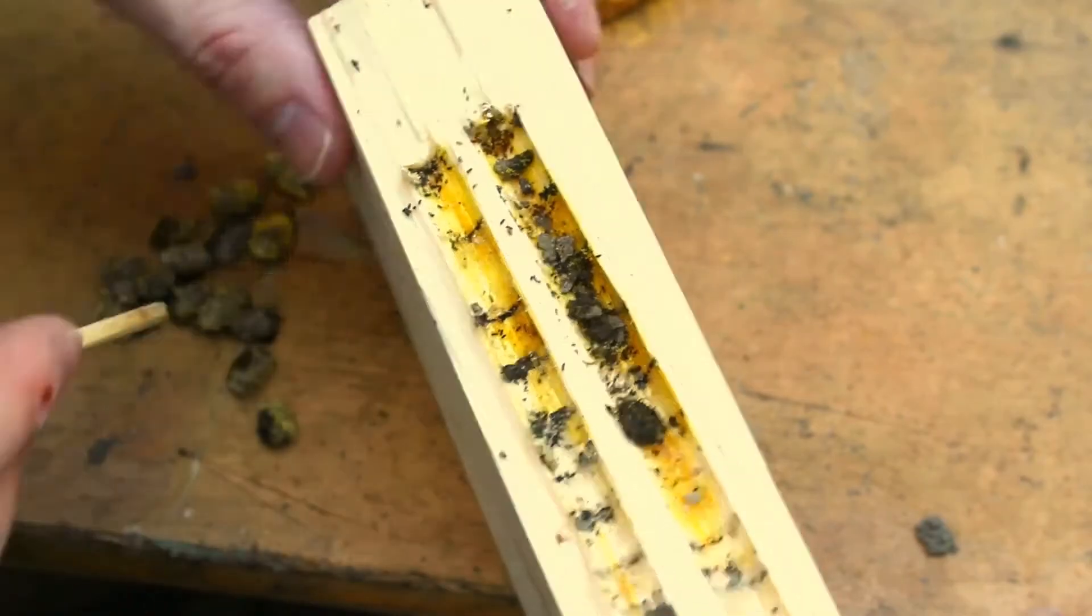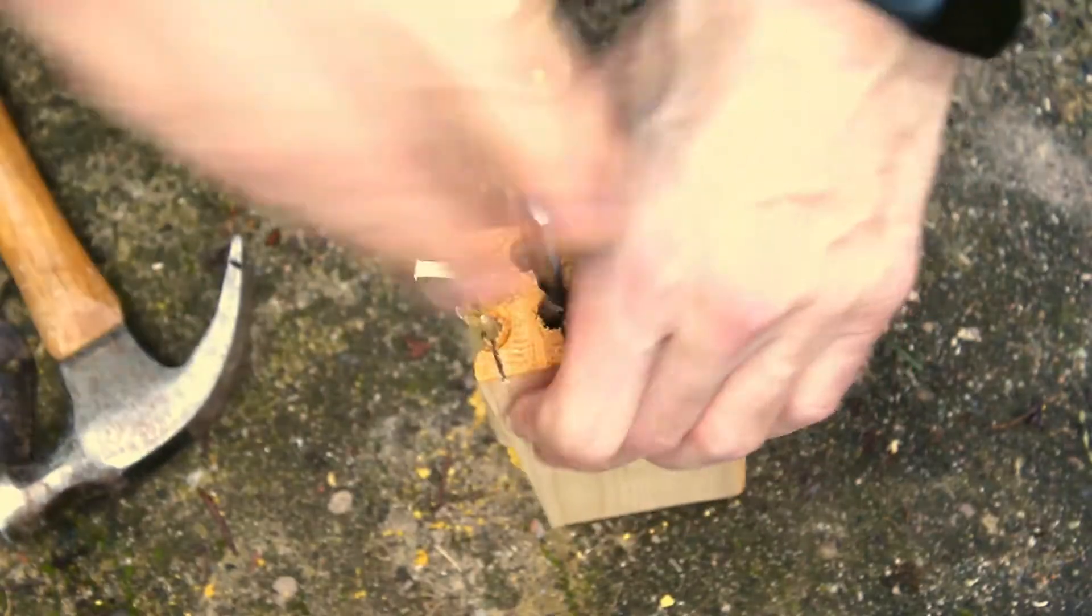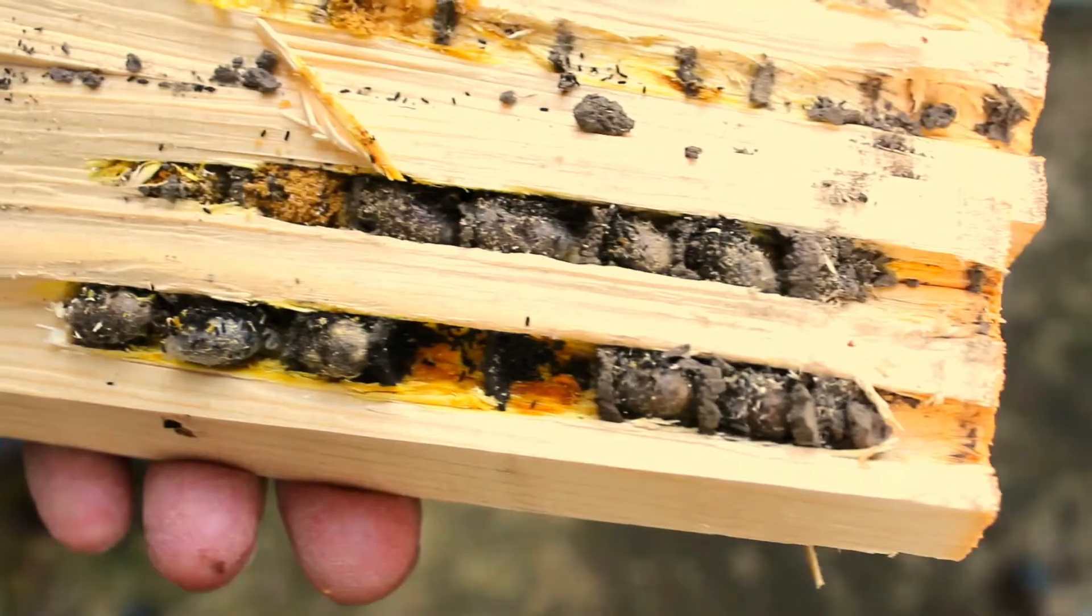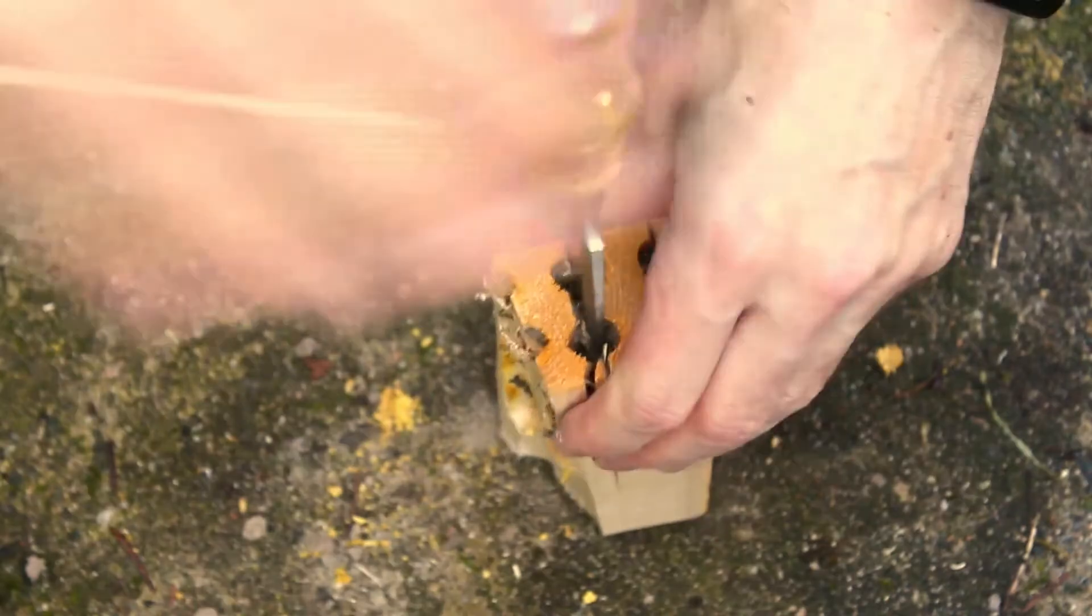A mason bee will determine the sex of an egg by choosing whether or not to fertilize it with the sperm that it has stored in its body. A fertilized egg will develop into a female while an unfertilized egg will become a male.